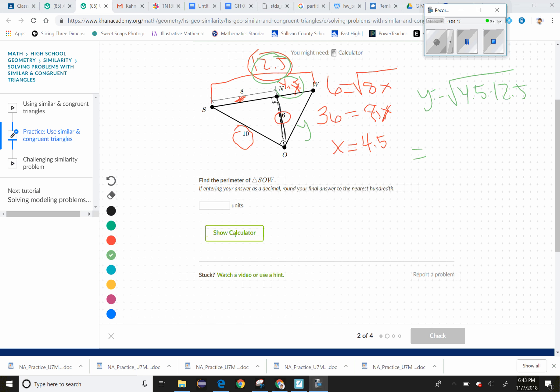We end up with 7.5. So if I'm going to do the perimeter, that 7.5 is there: 10 plus 7.5 plus 12.5, you end up with 30. That's our perimeter for SOW, that triangle.